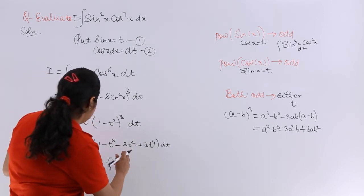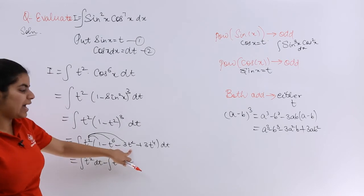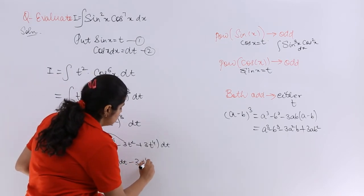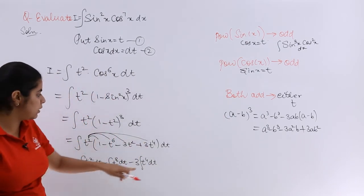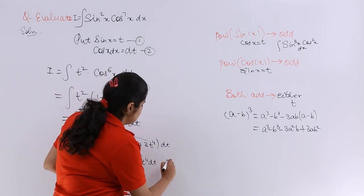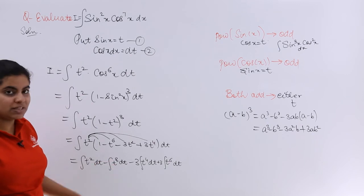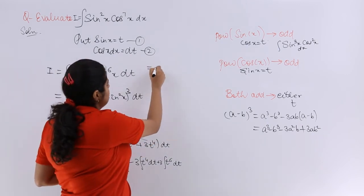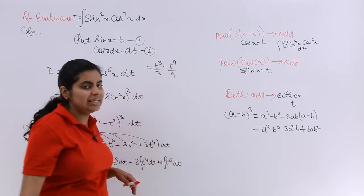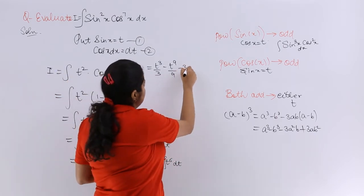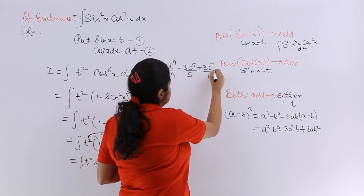Continuing the expansion with t² · (1 − t²)³, we get terms: t², −t⁸, −3t⁴, and +3t⁶. Integrating each: t²→t³/3, −t⁸→−t⁹/9, −3t⁴→−3t⁵/5, and 3t⁶→3t⁷/7. So the result is t³/3 − t⁹/9 − 3t⁵/5 + 3t⁷/7 + C.